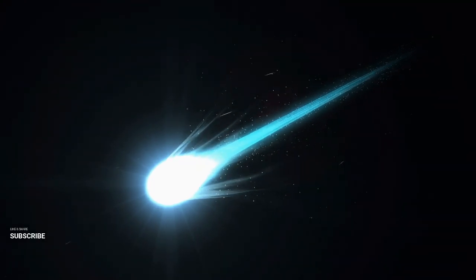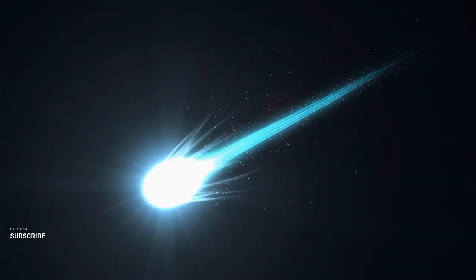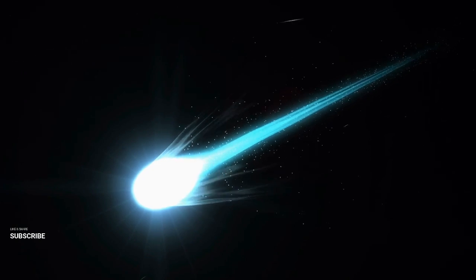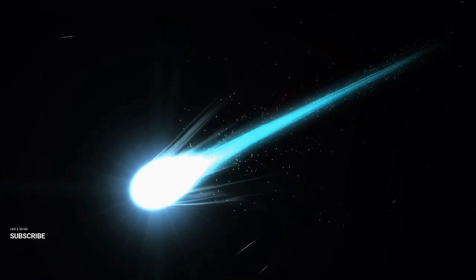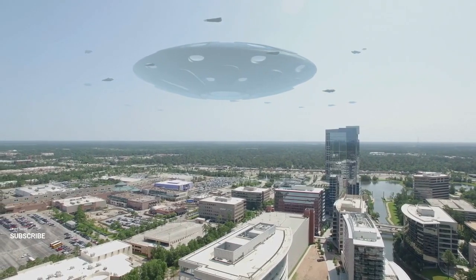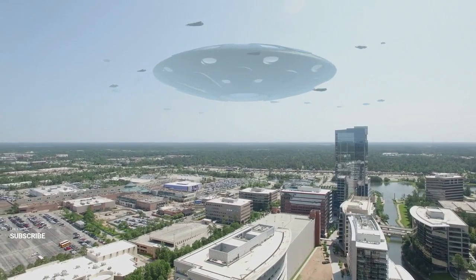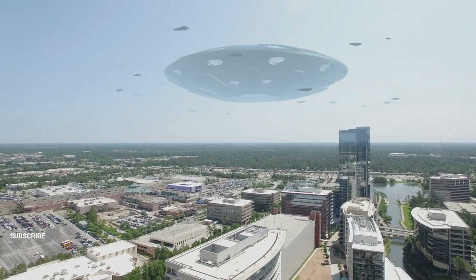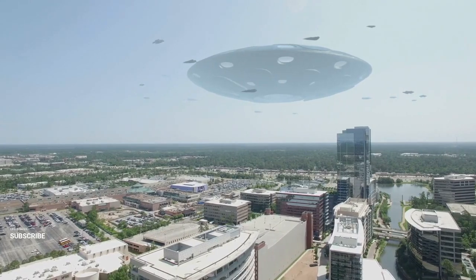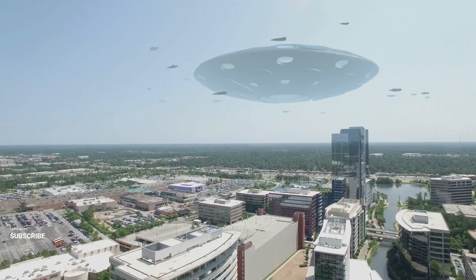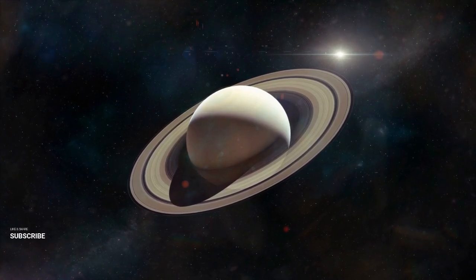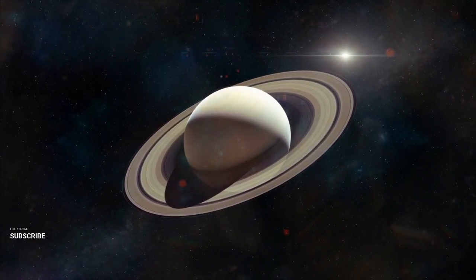One hypothesis suggests that the core and the ring might actually be two separate galaxies, gravitationally bound to create this remarkable structure. The core, a near-perfect sphere resembling a classic elliptical galaxy, may have captured a smaller galaxy that eventually became the ring. But there's a big problem with this idea. Both the core and the ring share nearly identical radial velocities, meaning they're essentially stationary relative to each other. For two separate galaxies to interact and remain in such perfect alignment without any relative motion is astronomically improbable. Hoag's object continues to defy easy explanations, leaving astronomers captivated by its beauty and mystery. It's a cosmic puzzle that reminds us just how much we still have to learn about the universe.